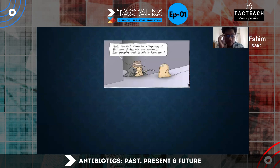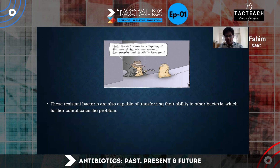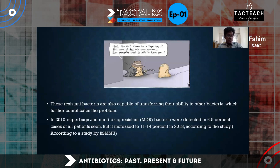That's not the only problem, though. Resistance genes — DNA segments — can actually be transferred from resistant bacteria to non-resistant bacteria, which further complicates the problem. Between 2010 and 2018, within just 8 to 9 years, the percentage of multidrug-resistant bacteria increased from 6.5% to almost 14% — more than double. This is something to be very concerned about.